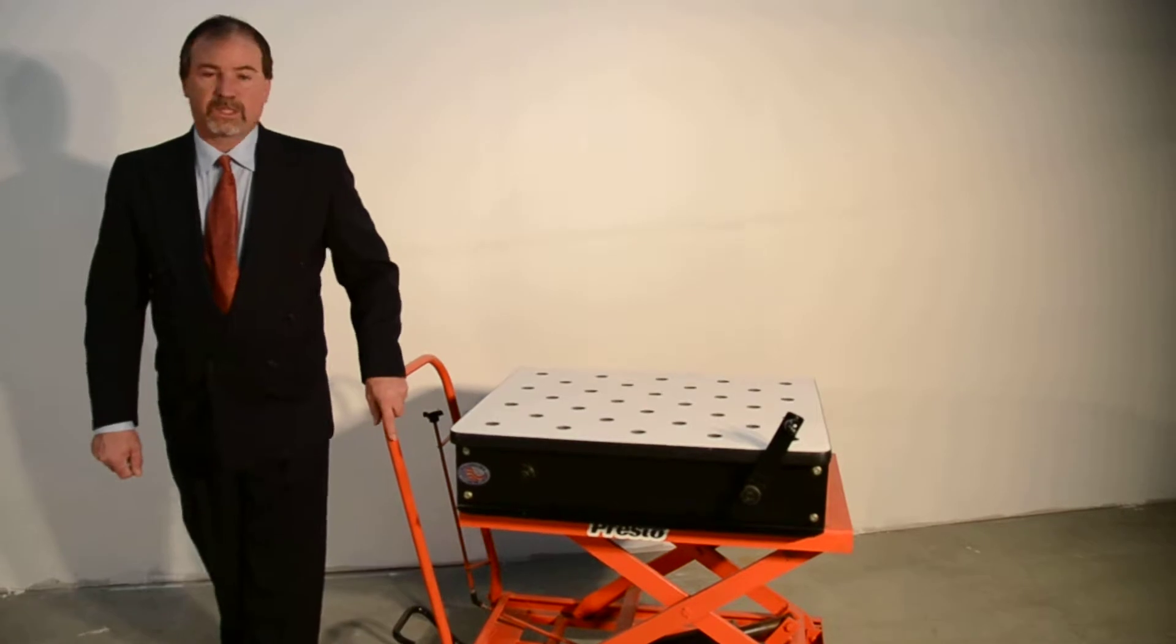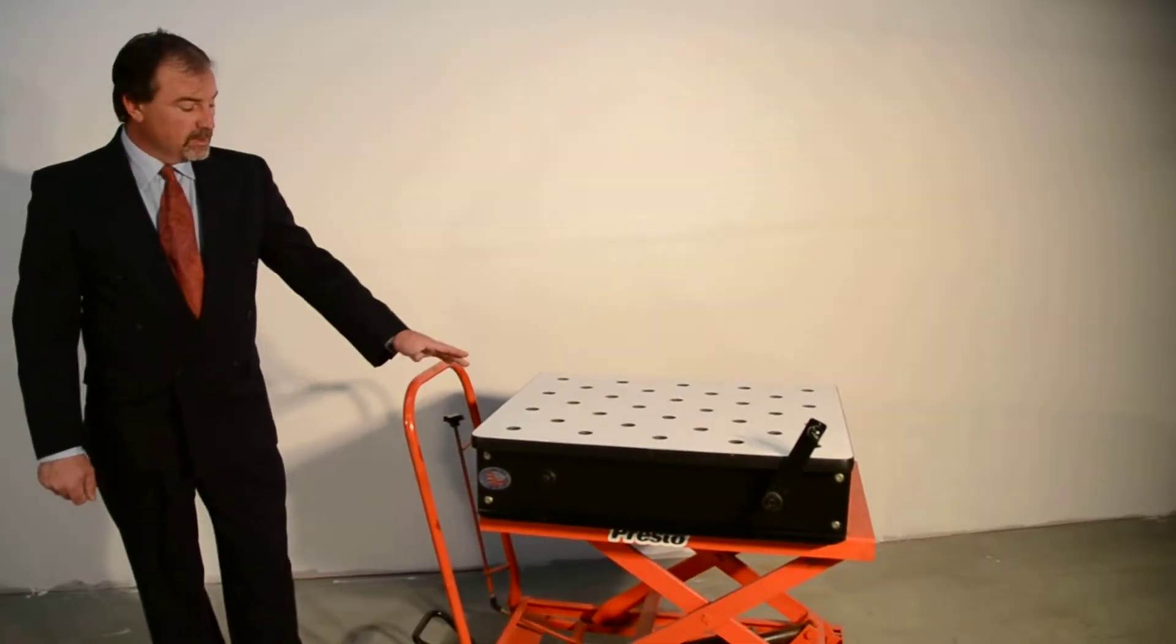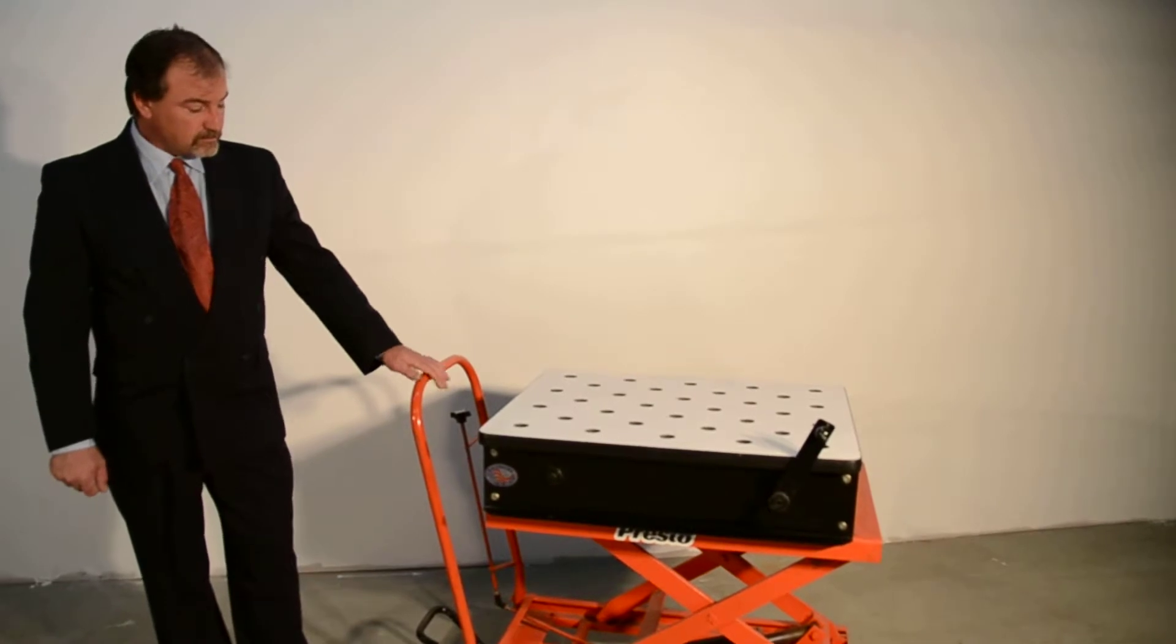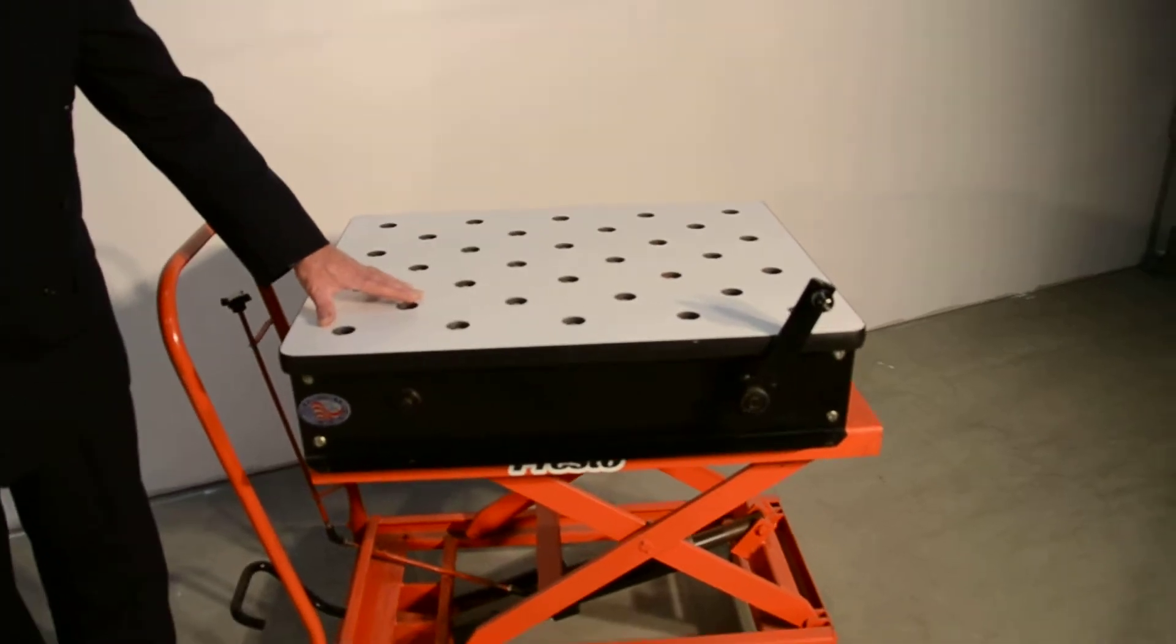ProLine is a lot more than just workbenches. We also have a full section of material handling items. This happens to be one of them. Here we're showing our MRBT mobile retractable ball transfer table.